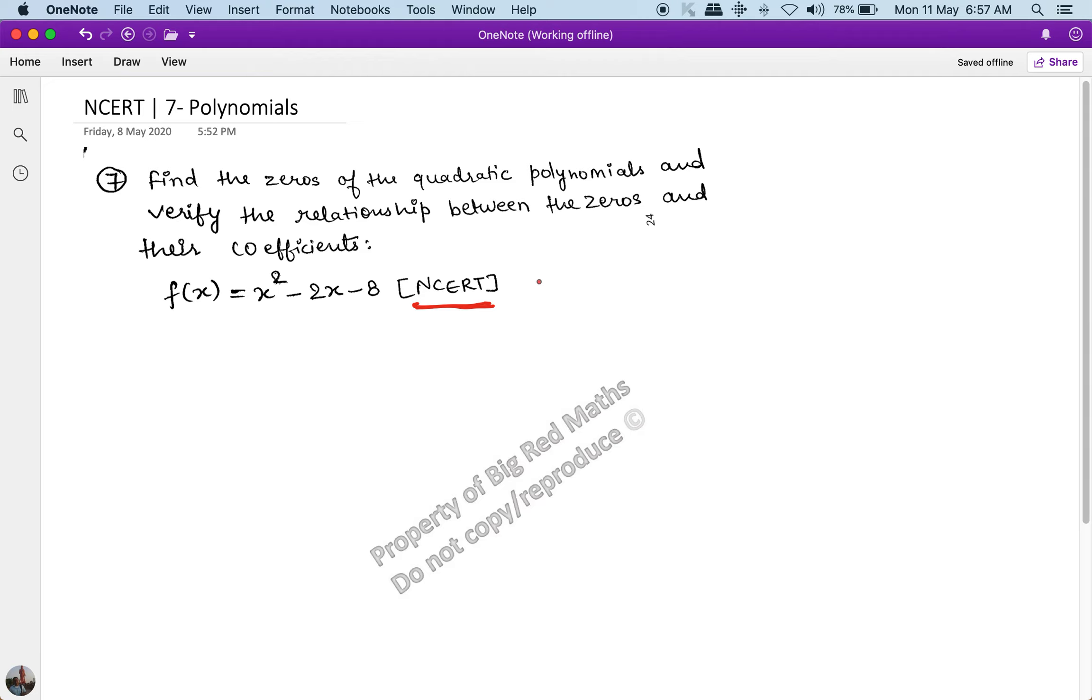Now let's start solving this one. This question says find the zeros of a quadratic polynomial and verify the relationship between the zeros and the coefficients. So you have to find the zeros and verify the relation between the zeros and the coefficients.